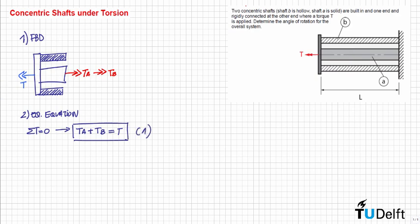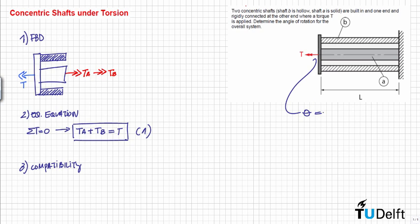We have two unknowns and one equation, so we need to look for one additional equation — in this case the displacement compatibility equation. Looking at the geometry of the problem, both shafts are rigidly connected at this end. So the rotation angle of the structure theta will be equal to the rotation angle of the inner shaft theta A and equal to the rotation angle of the outer shaft theta B.